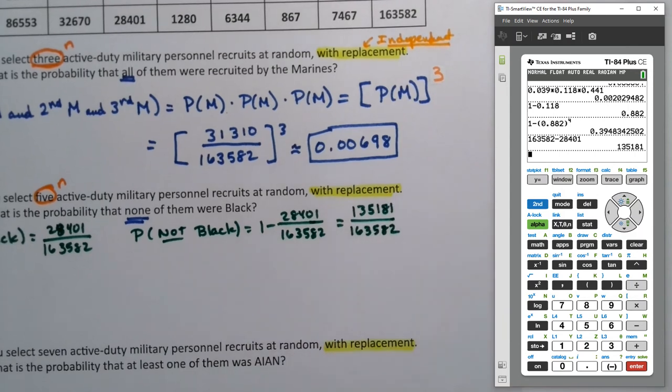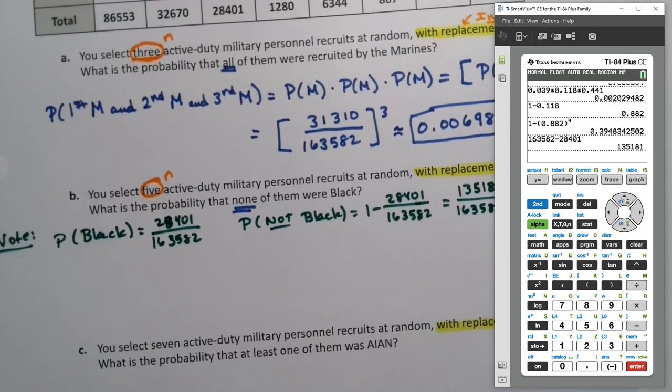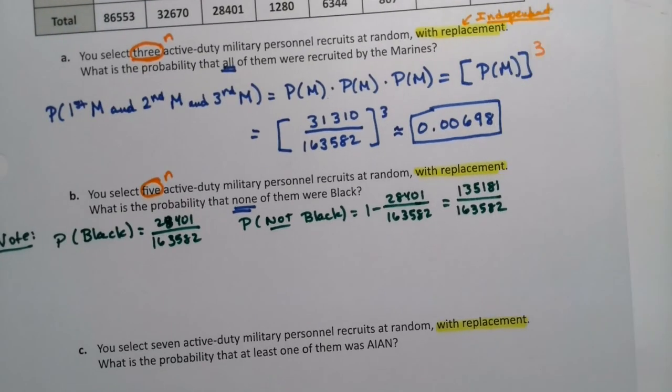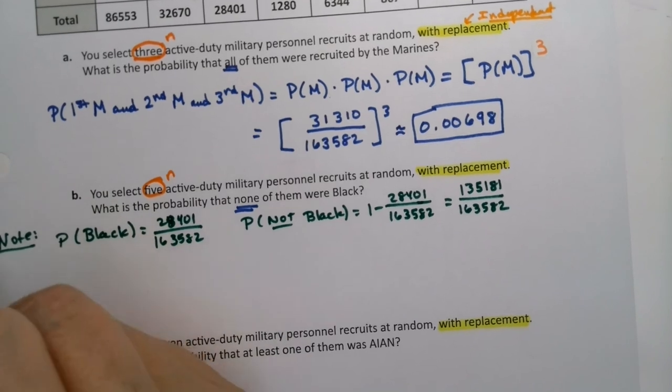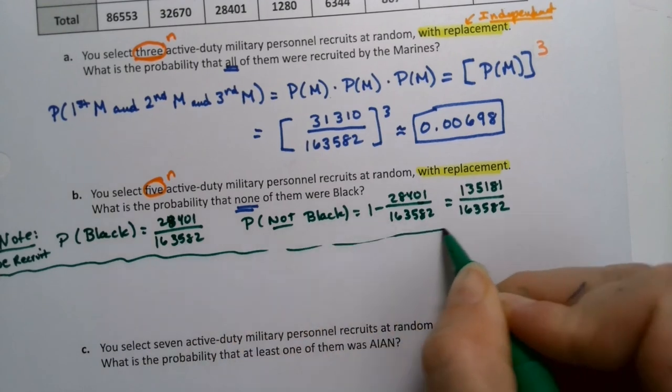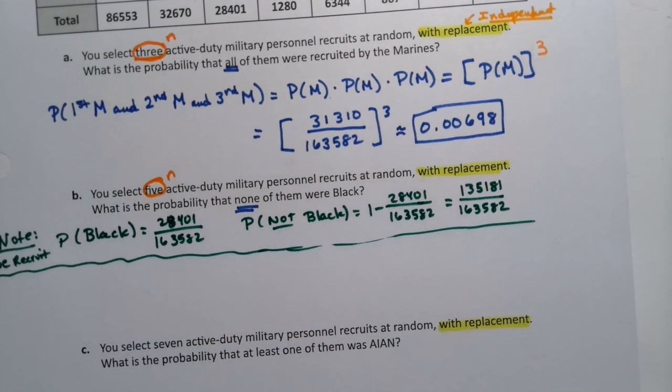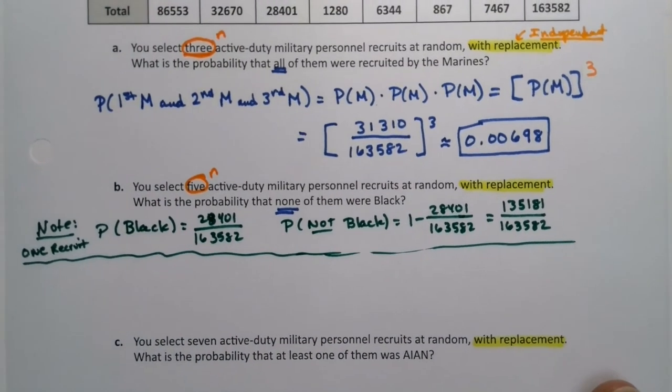So I could write that right here: 135,181. Now, if I'm interested in a decimal, of course, I could find that as well. Now that is not our answer. That's not what they're talking about because we're talking about five recruits. This is for one recruit. We kind of figure this out ahead of time.